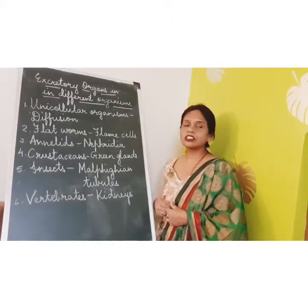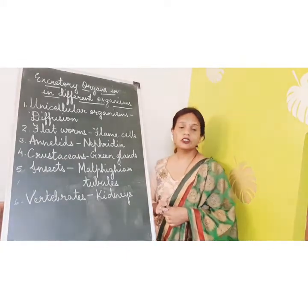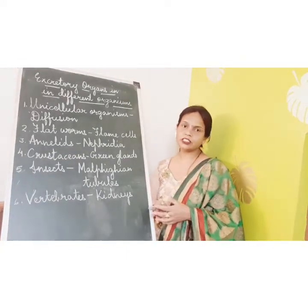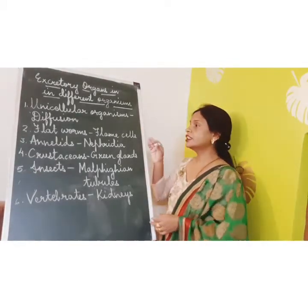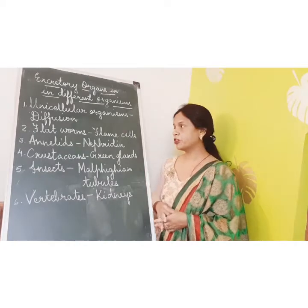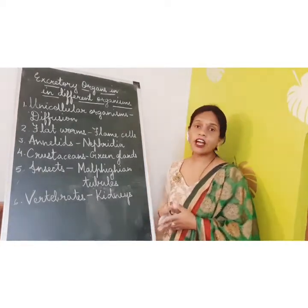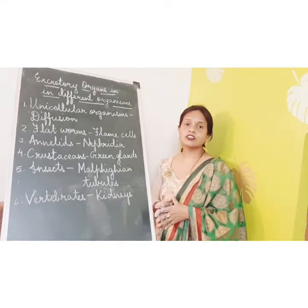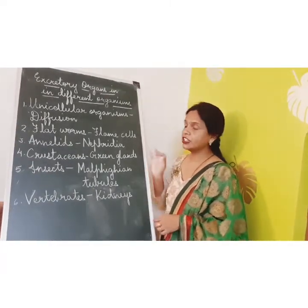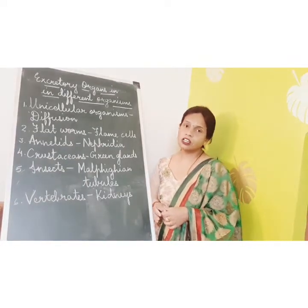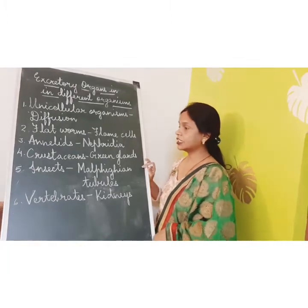Now we look at excretory organs in different organisms. In unicellular organisms, excretion takes place through their body surface by the process of diffusion. In flatworms like tapeworm, it takes place through flame cells. In annelids such as leech and earthworm, it takes place through nephridia. In crustaceans like crabs, lobster, and shrimps, the excretory organ is green glands.